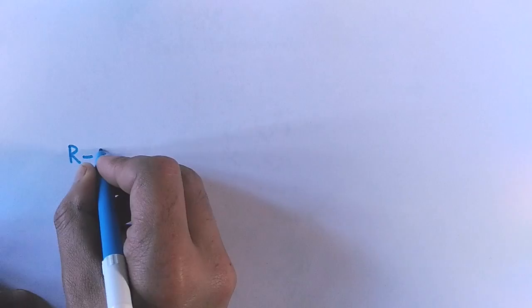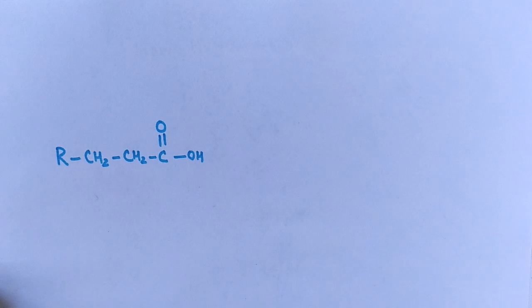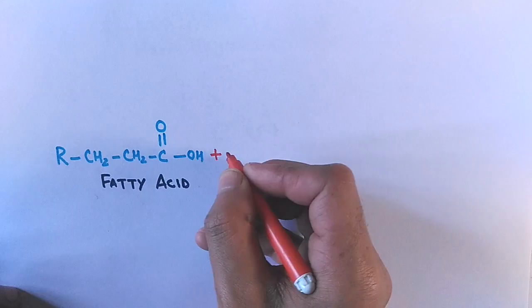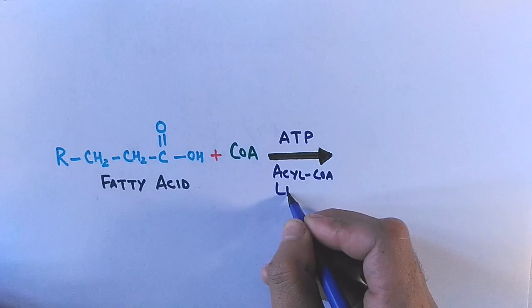We have fatty acid in the form of R-CH2-CH2 with a carboxylic end, or can be any alkyl group in the fatty acids. This may be a long chain fatty acid or it may be a short chain fatty acid. And this fatty acid combines with CoA, that's coenzyme A, in presence of ATP which delivers energy to this reaction. And this reaction is catalyzed by an enzyme acyl CoA ligase.